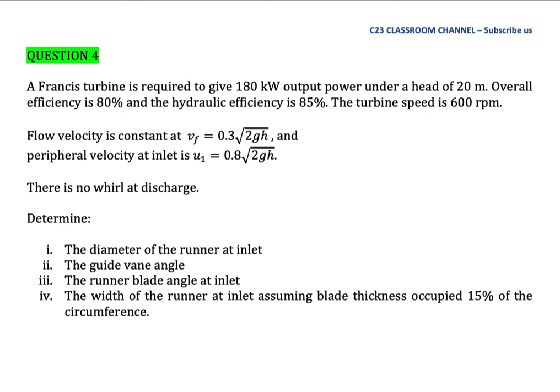Francis turbine tutorial question number four. A Francis turbine is required to give 180 kilowatt output power under a head of 20 meters. Overall efficiency is 80 percent and the hydraulic efficiency is 85 percent.